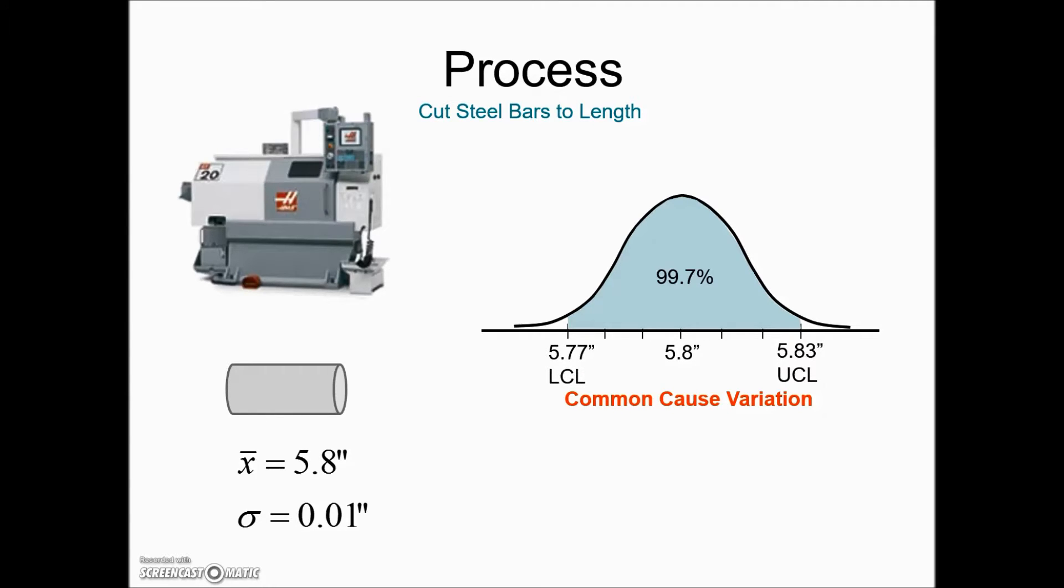We refer to these as the upper control limit, which is the three standard deviations above, and LCL is short for the lower control limit. A process is in control as long as the values fall between these boundaries.